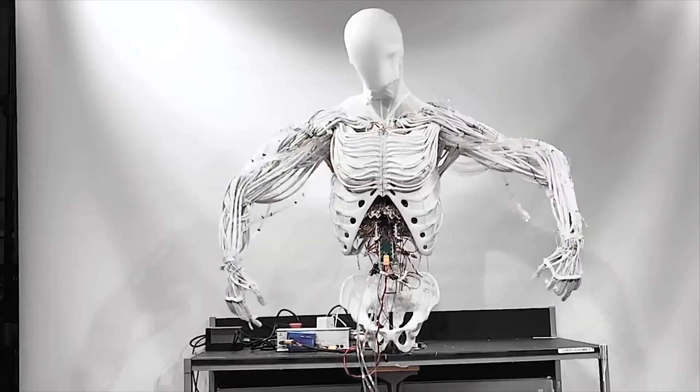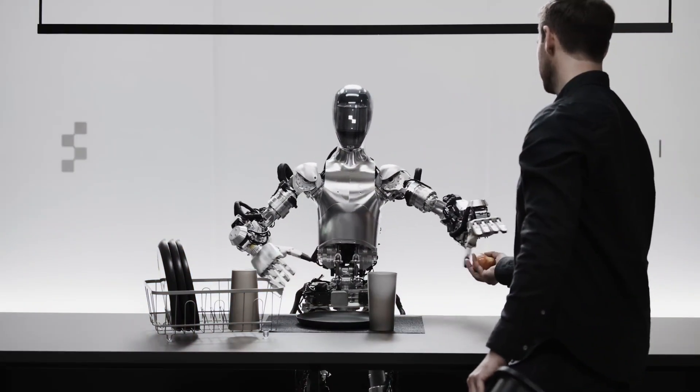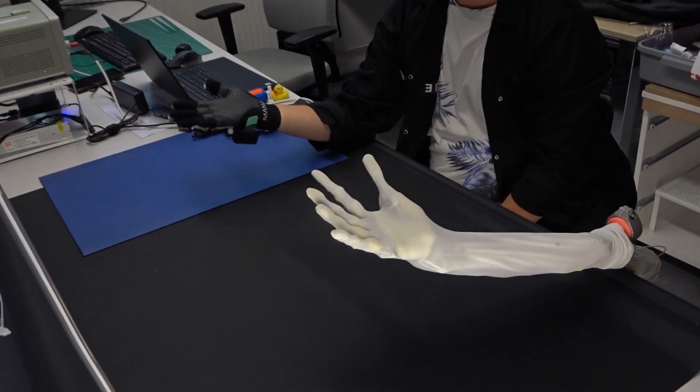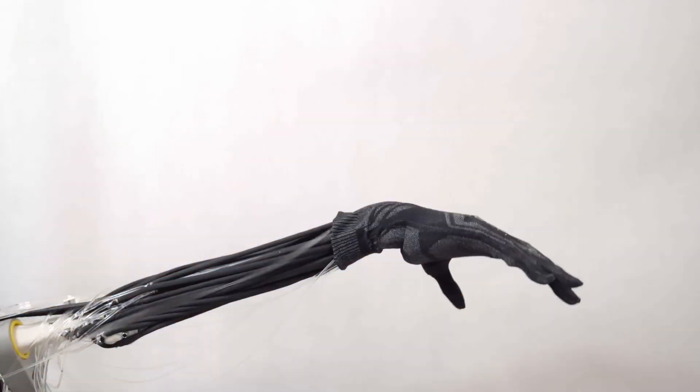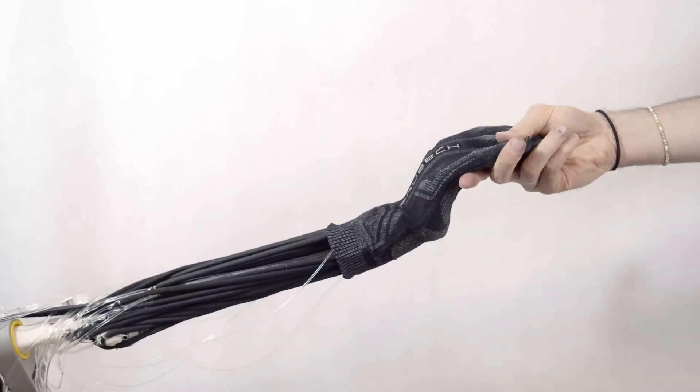What's particularly fascinating about this project is how it represents the evolution of robotics. We've moved from the rigid industrial robots of the past to today's biomimetic designs that mirror natural movement. Clone's approach suggests that the future of robotics lies not in reinventing human movement, but in carefully studying and replicating it.